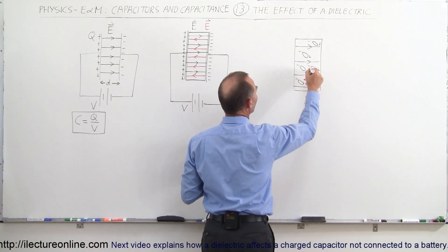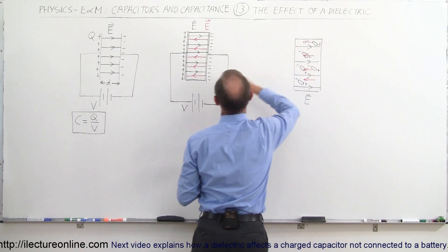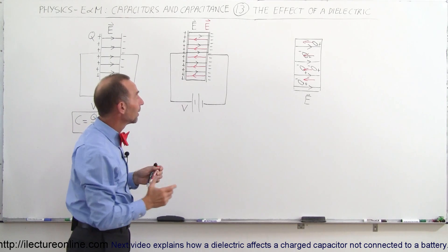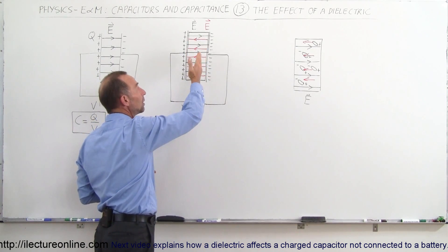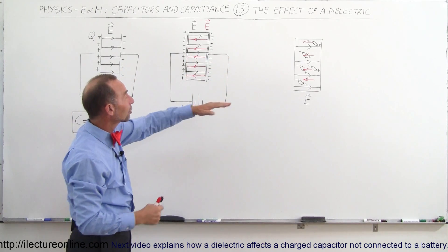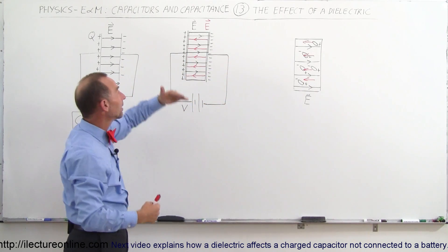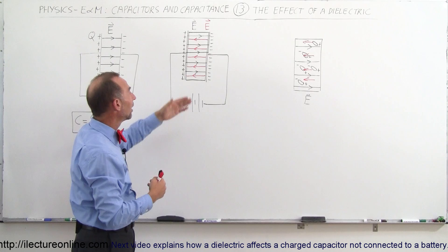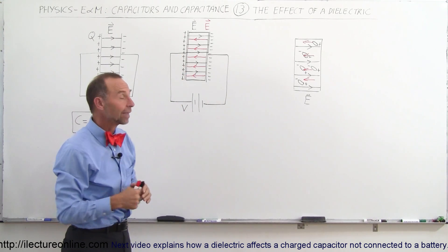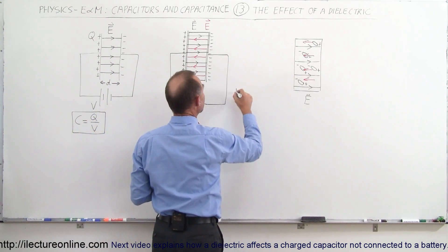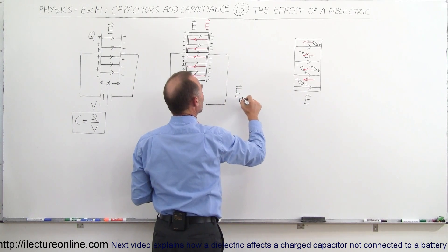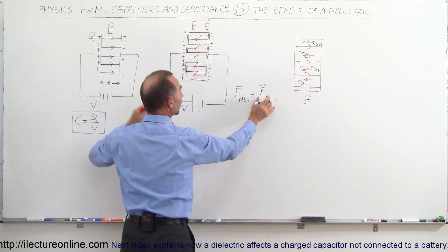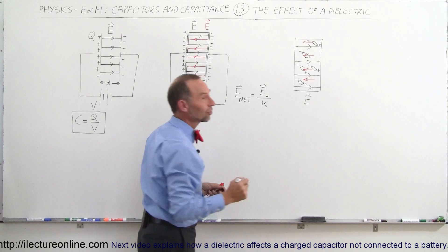You end up with an electric field created in the opposite direction, as indicated here in the capacitor with the dielectric. The electric field caused by the realignment of the atoms or molecules inside the dielectric will, to some extent, negate the original electric field, so the sum of the two is a much lower amount than before. The new net electric field E_net across the capacitor equals the original electric field E₀ divided by the dielectric constant K.